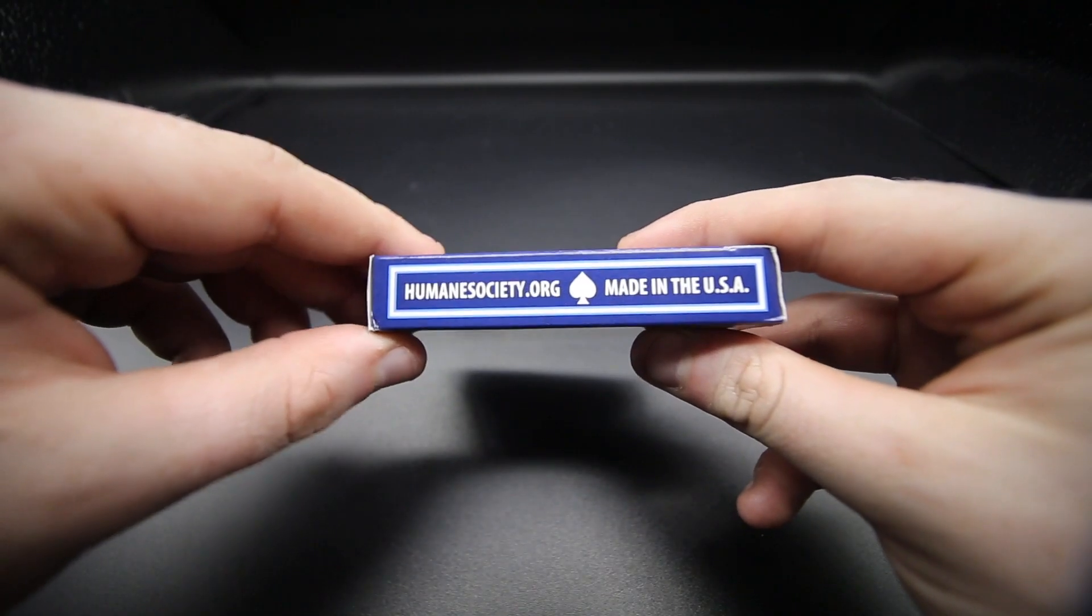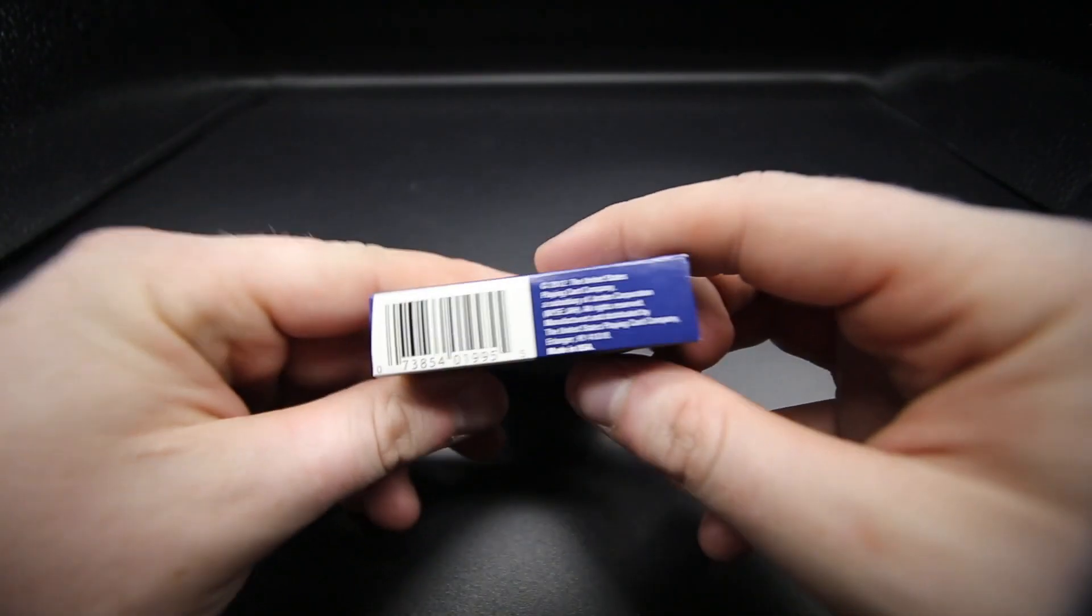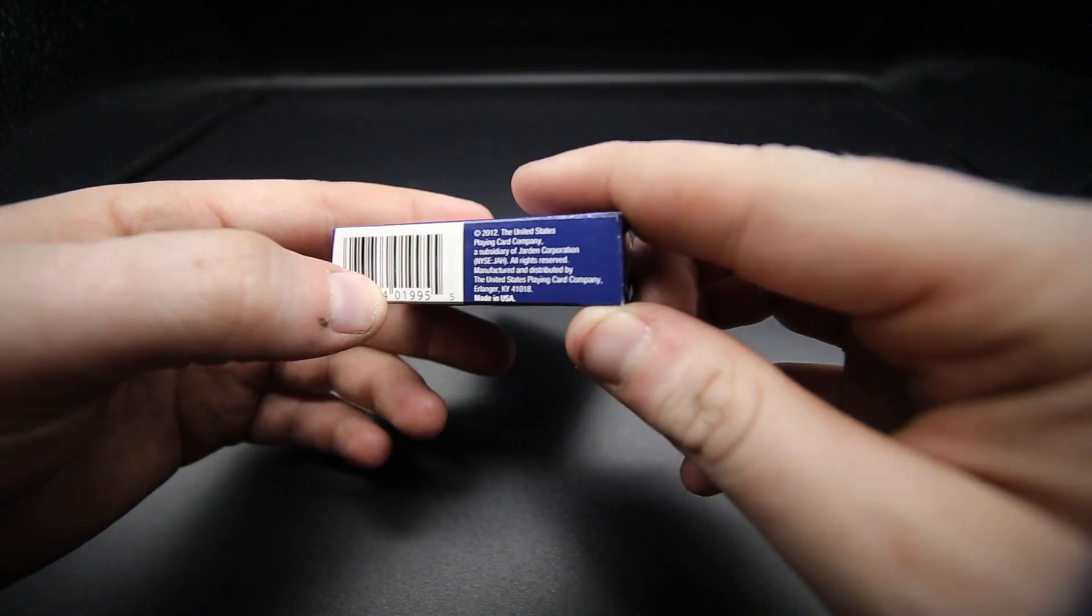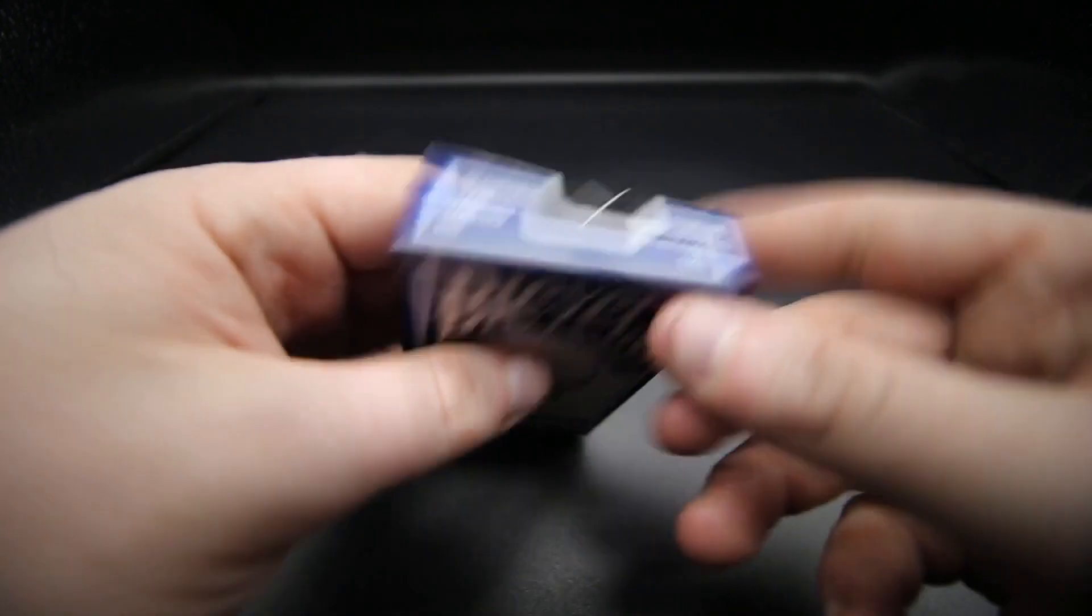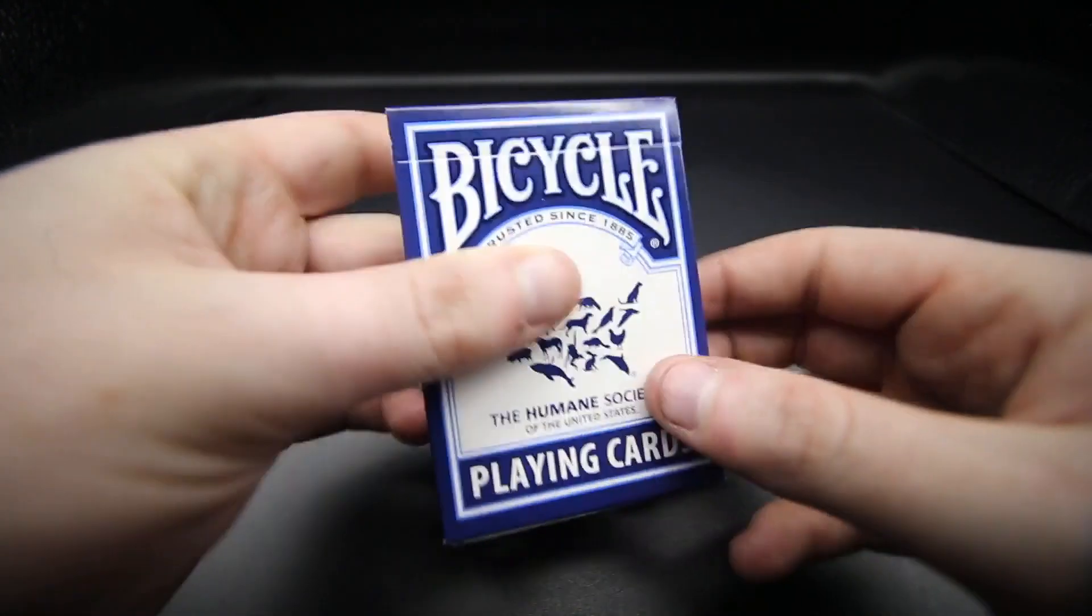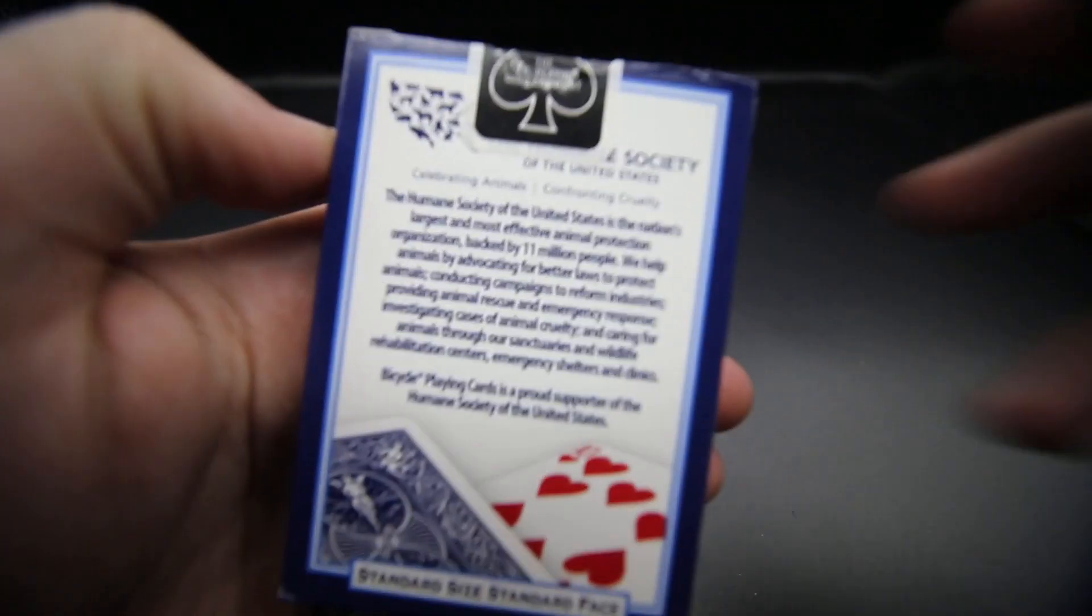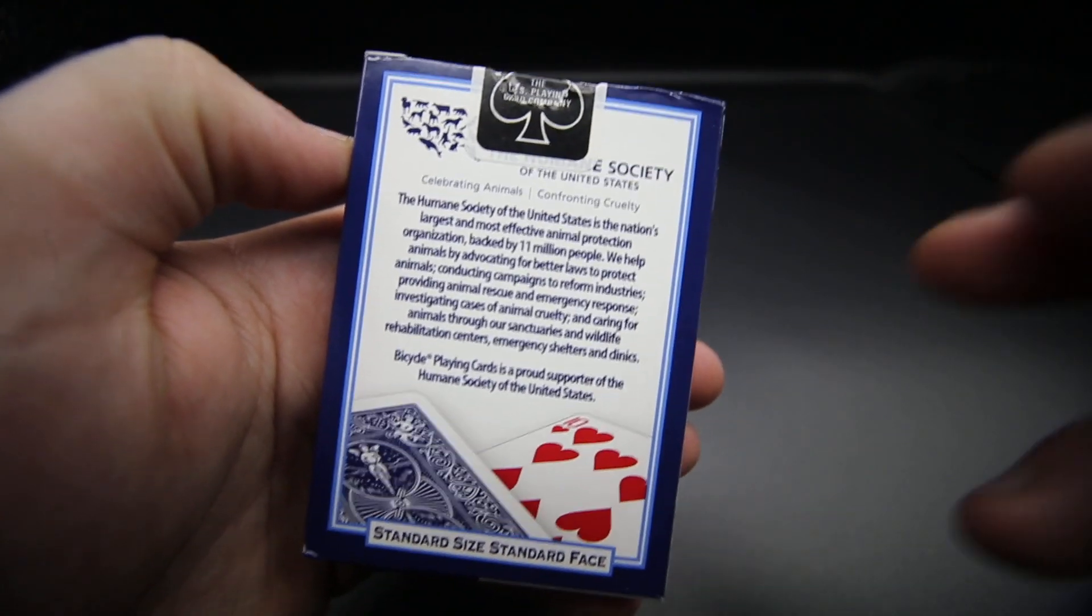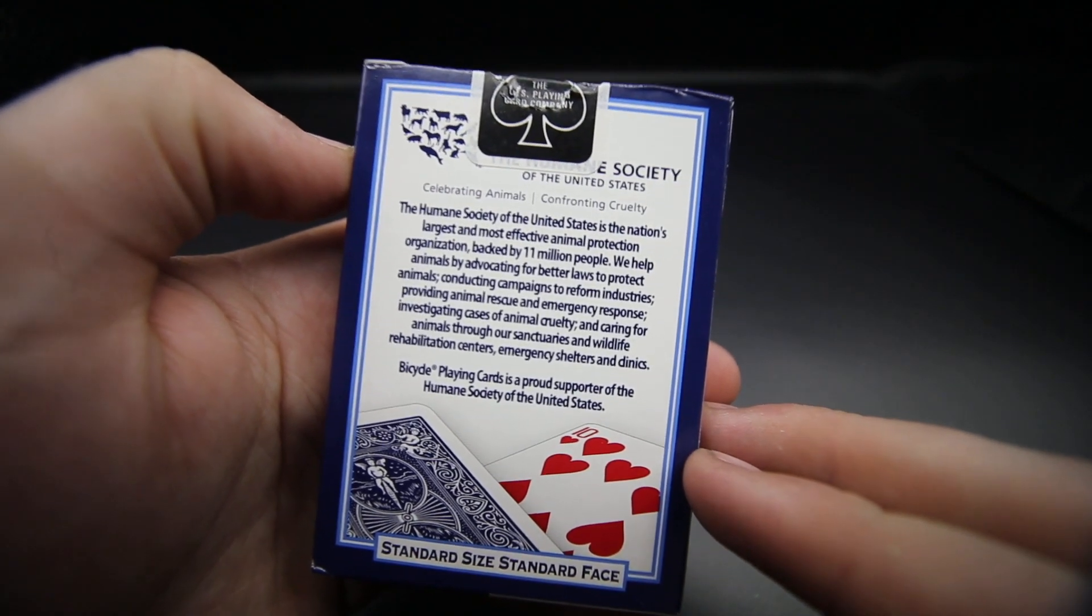Made in the USA, there's a barcode and the copper information there. This was produced in 2012, has a black USBC seal, and it has standard size, standard face. Then it actually has, I'll let you look at this, so it goes the Humane Society of the United States is the nation's largest, most effective animal protection organization.